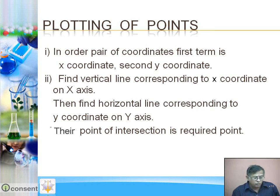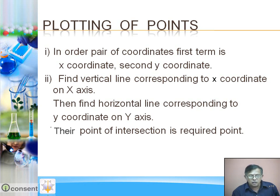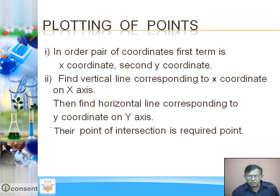By convention, to find a point, first find the vertical line corresponding to the x-coordinate on the x-axis. If the x-coordinate is 2, look at 2 on the x-axis and draw a vertical line. If the x-coordinate is minus 3, find minus 3 on the x-axis and draw a vertical line there. Then find the horizontal line corresponding to the y-coordinate on the y-axis. If the y-coordinate is 3, find 3 on the y-axis and draw a horizontal line.